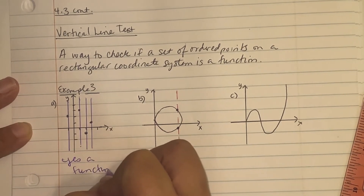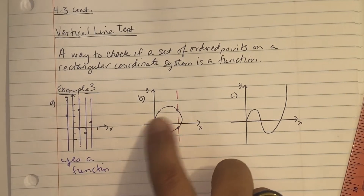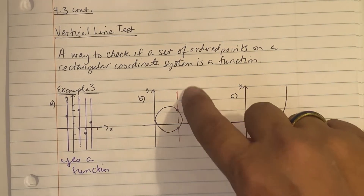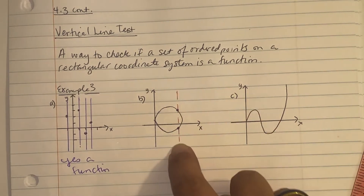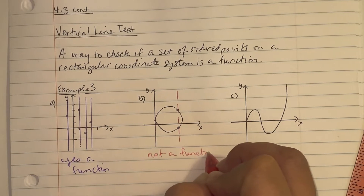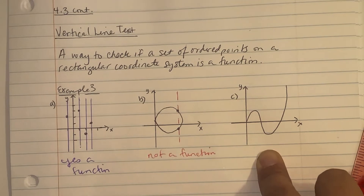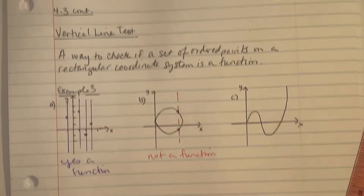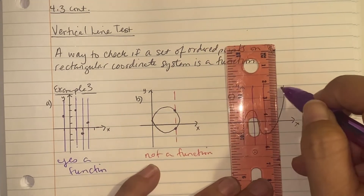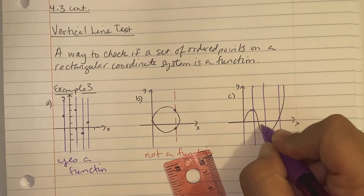For part b, we have a circle and a line going down through two points, hitting it in two locations. Because of this, it does not pass the vertical line test — this is not a function. When we look at c, it is a curved graph. If I take a straight edge and draw a line straight down, I will never hit the graph at more than one location, so this one is a function.